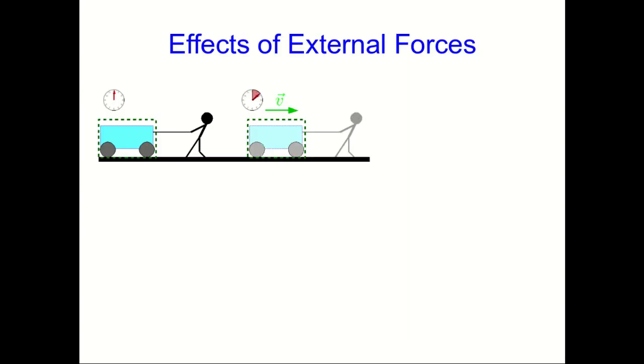Let's start with this example of a person using a rope to pull a cart. Our system is going to be just the cart. Because of the person pulling on it, the cart speeds up, and that's because there's a force exerted on the cart by the rope. Note that the rope isn't in the system, so that's an external force.